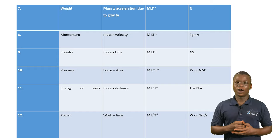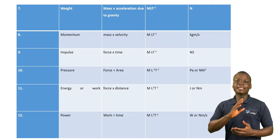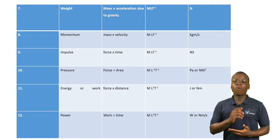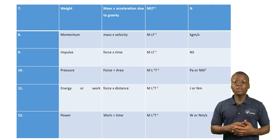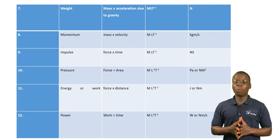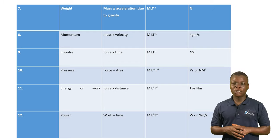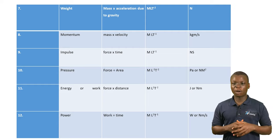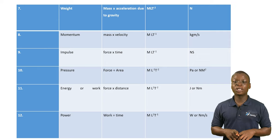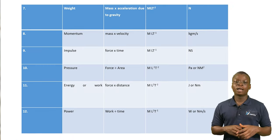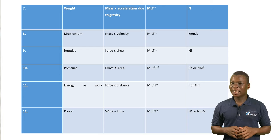We have pressure, and the derivation of pressure is force over area, or force divided by area. Having gotten force and area earlier, we combine the two and get the dimension to be ML raised to power minus 1 times T raised to power minus 2. Combining everything together, we have MLT raised to power minus 1 and T raised to power minus 2. Pressure is measured in Pascal, or Newtons per meter squared.